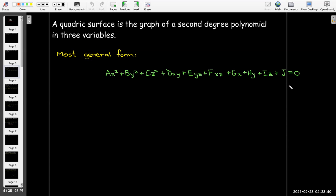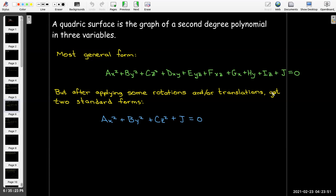But fortunately, if we apply some rotations or translations to the graph, really it's just going to come down to two standard forms. We'll either have only squared terms, where A, B, and C may be positive or negative, and possibly a non-zero constant term.